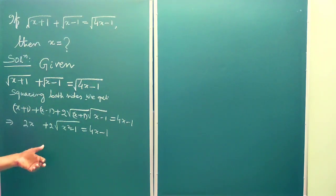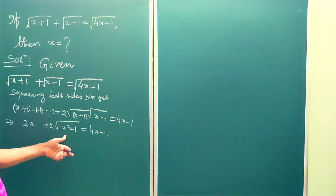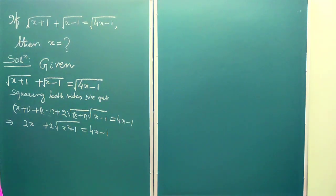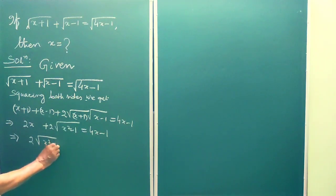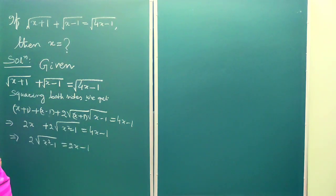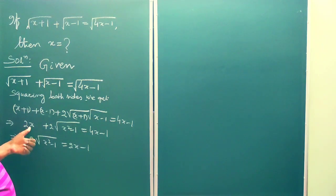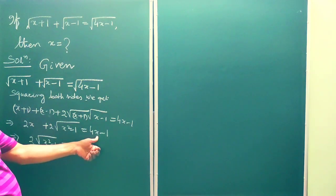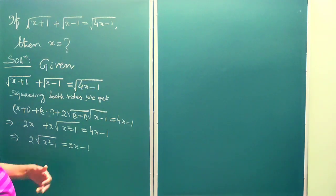So we get 2x plus 2 root over (x squared minus 1) is equal to 4x minus 1. This implies 2 root over (x squared minus 1) is equal to 2x minus 1, because the 2x cancels with 2x — the 2x goes to the other side, giving 2x minus 1.